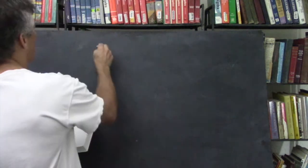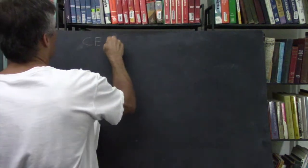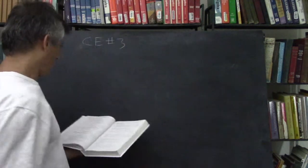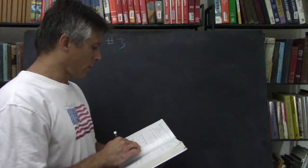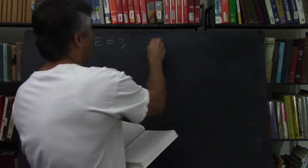So classroom exercises in section 5.1. Let's try number 3. Okay, we've got a parallelogram and we've got to find x, y, and z.